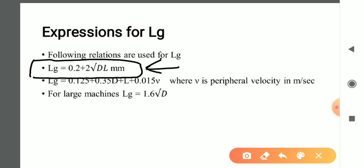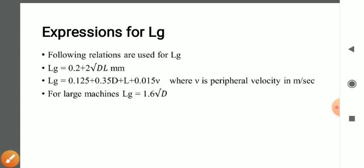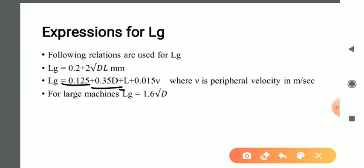The air gap length can also be calculated under certain constraints. If a velocity constraint is given, then you can use: lg = 0.125 + 0.35D + L + 0.15 × V_d. And in a few cases, if the machine is said to be a large machine, then you can calculate lg by neglecting the length term: lg = 1.6√D.